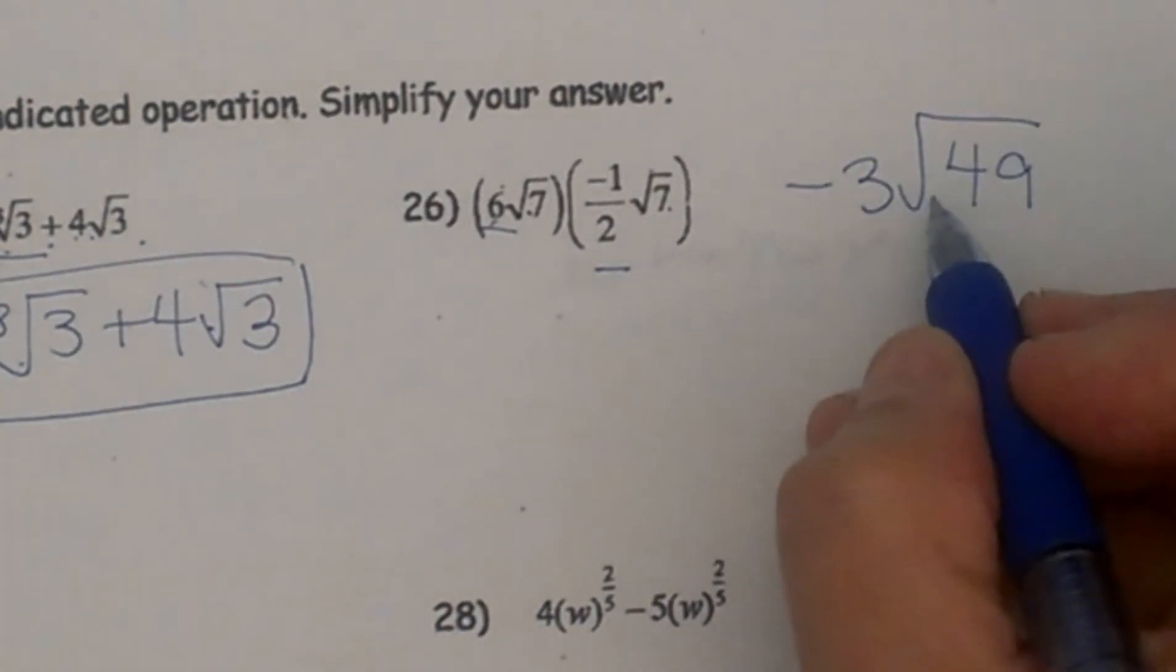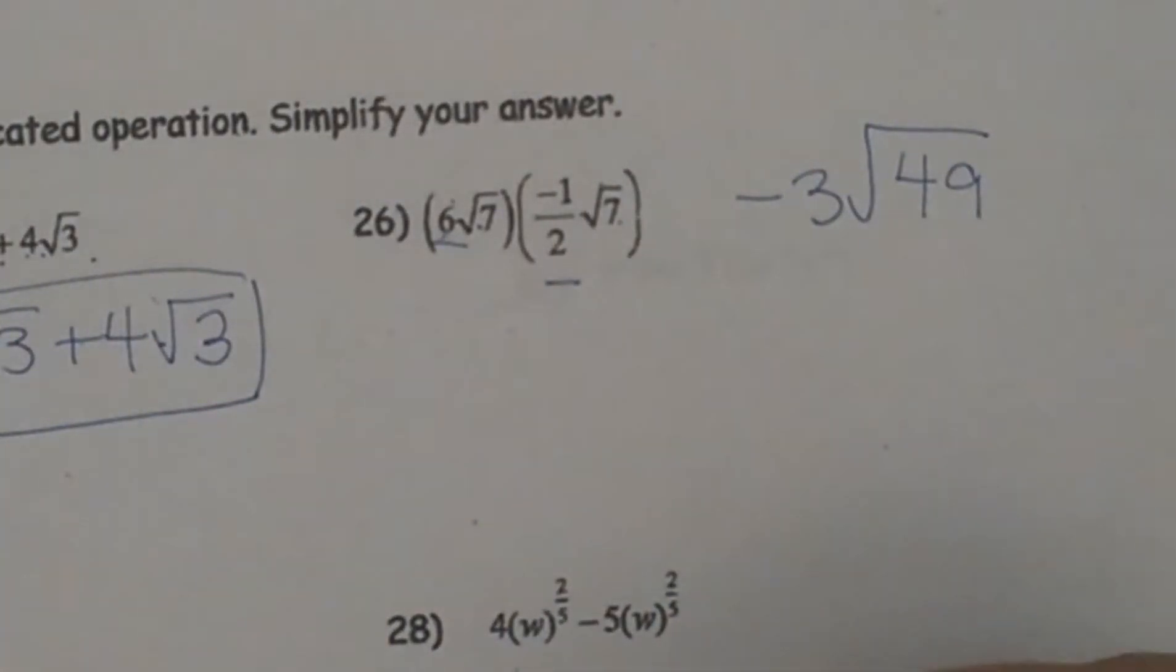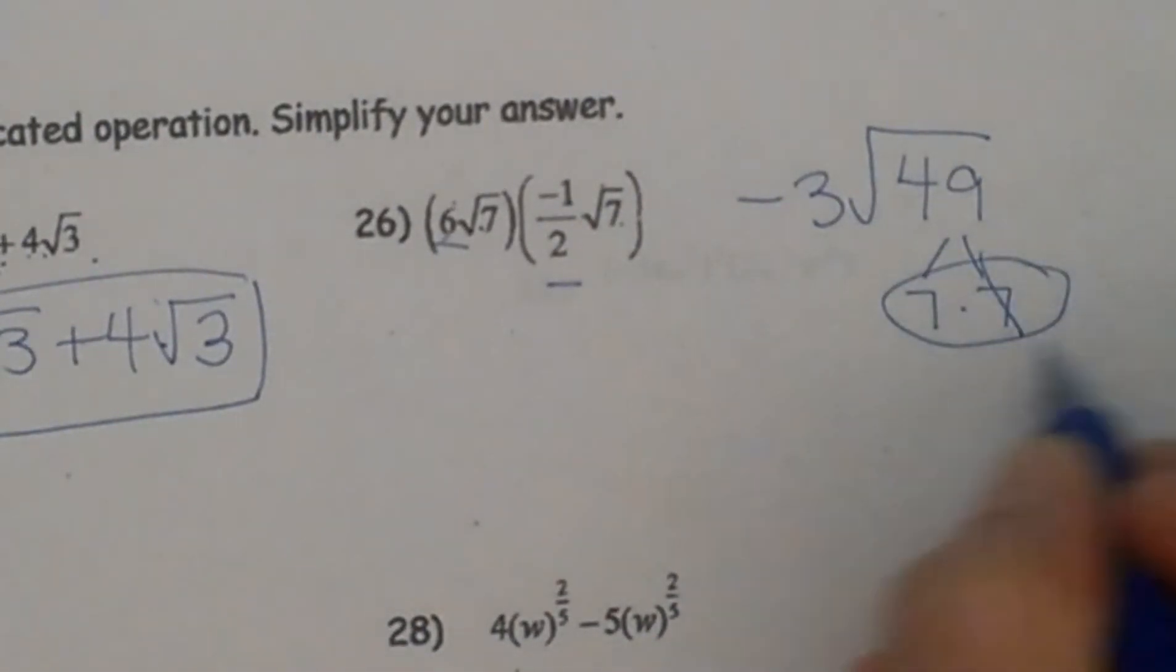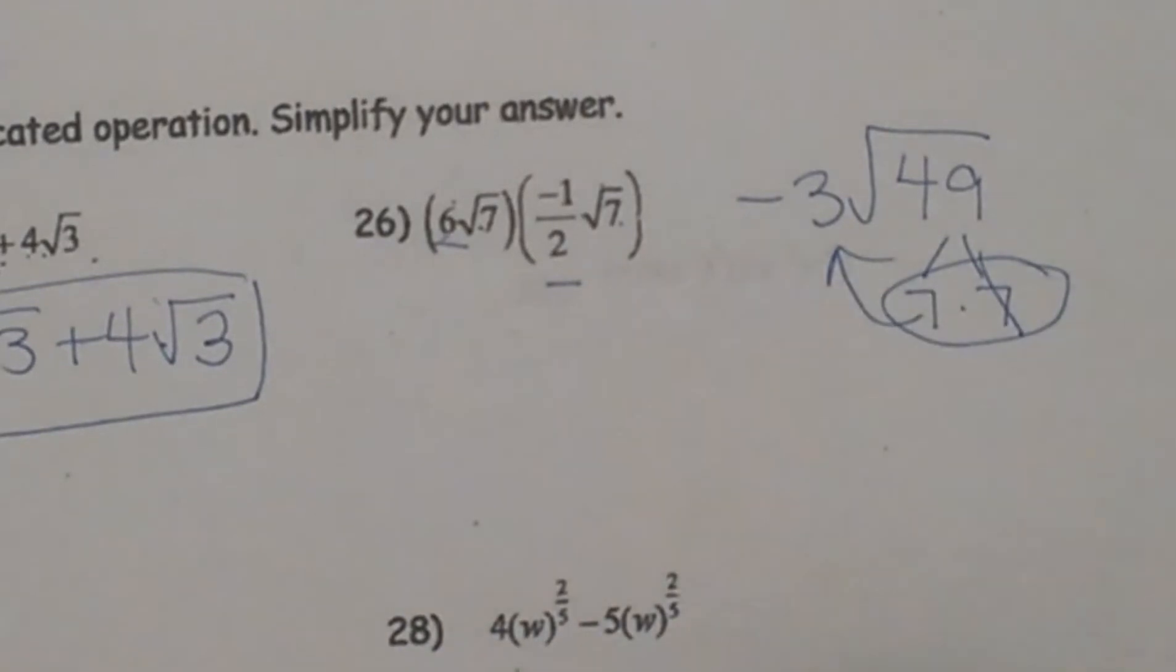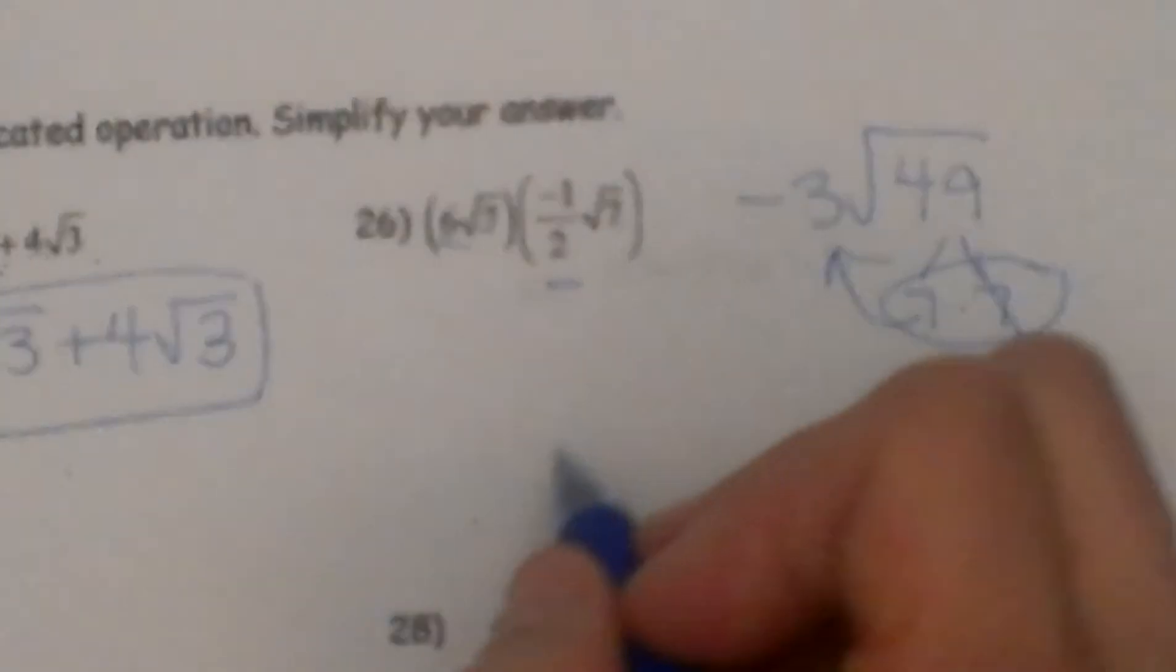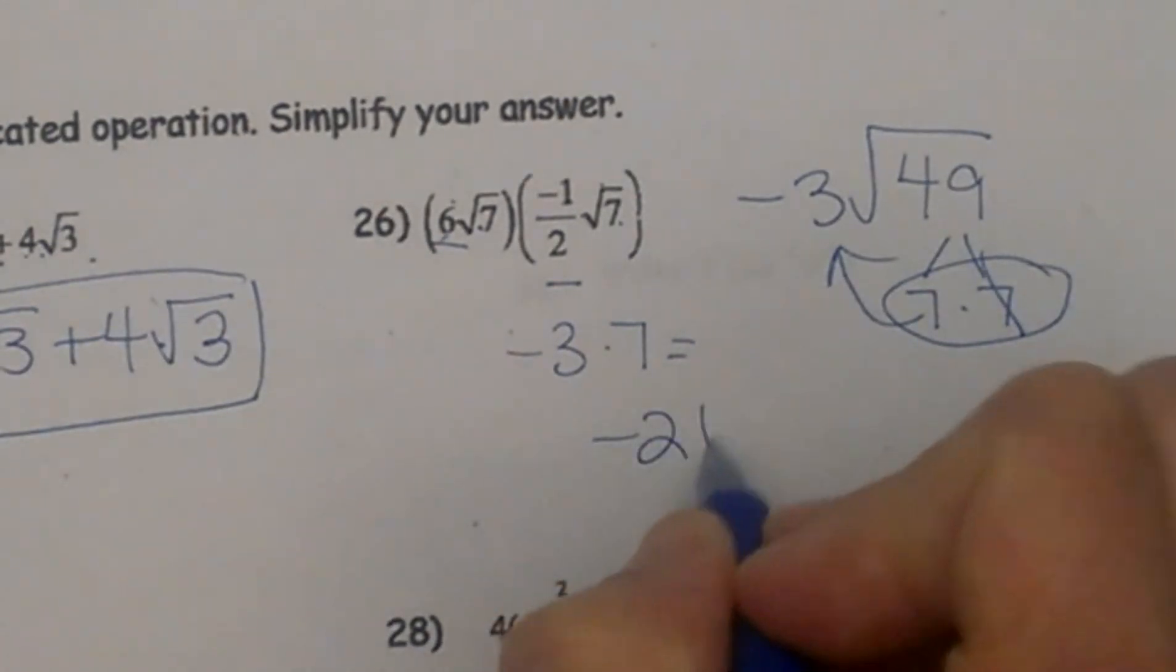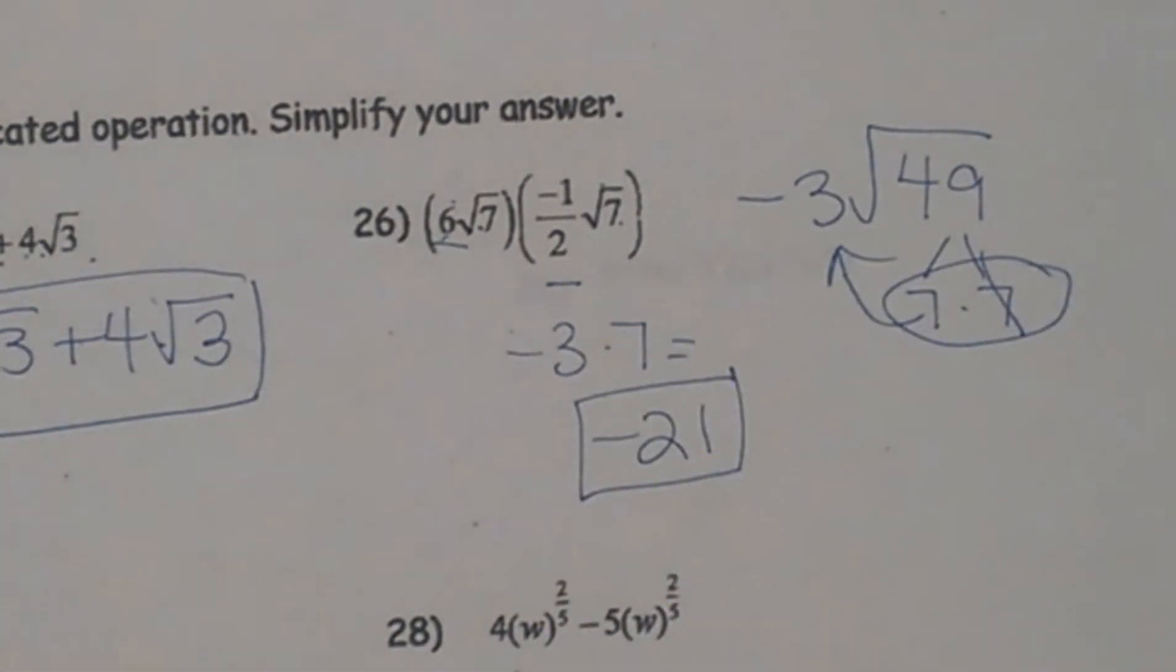Now I have a square root, so I need to see does 49 break down. Well 49 is 7 times 7, so yes I have a pair, so I can bring that 7 out. And what do I do? I multiply it with a negative 3, so my final answer is negative 21. So there is how to multiply.